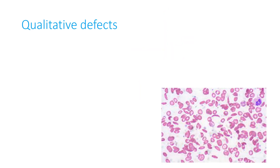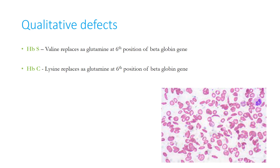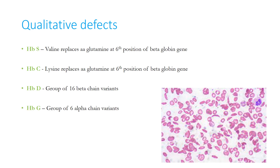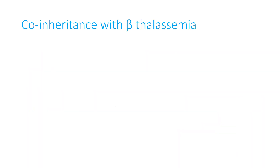Some qualitative defects in the hemoglobin molecule include hemoglobin S, where valine replaces glutamine at the 6th position of the beta globin gene; hemoglobin C, where lysine replaces glutamine at the 6th position; hemoglobin D, which is a group of 16 beta chain variants; and hemoglobin G, which is a group of 6 alpha chain variants.